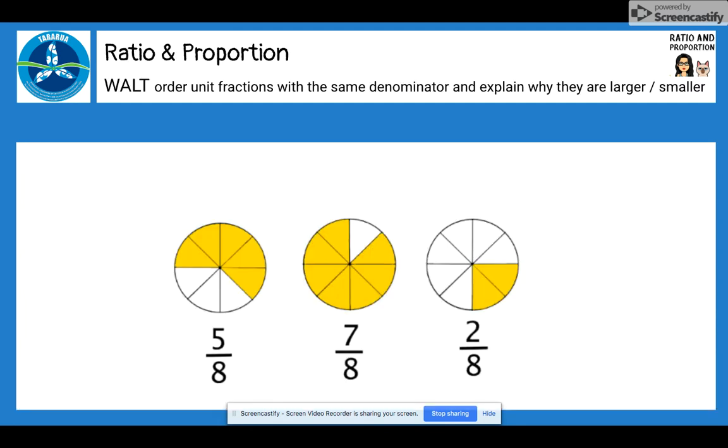I'm going to have a look at these fractions. Each of them have got a different numerator which is the 5, the 7 and the 2, but they all have the same denominator. If we look at the shapes we can see that this one here has got 2 out of 8. So 8 is the denominator and 2 parts of the fraction are shaded in.